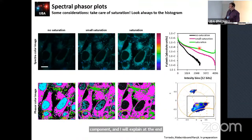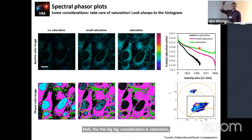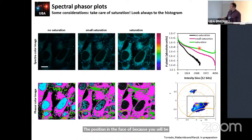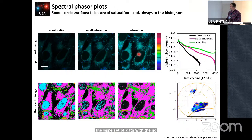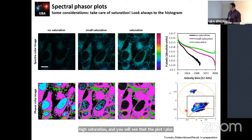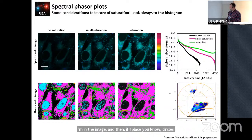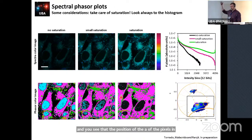An important acquisition consideration is saturation. If we saturate our spectra, it will change the position in the phasor because we will be capturing a different center of mass. I illustrate this with an experiment showing the same dataset with no saturation, small saturation, and high saturation. You can see that the cluster of pixels in the phasor shifts dramatically, going to a completely different position than expected, simply because you are not collecting the proper spectra.